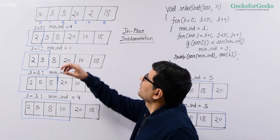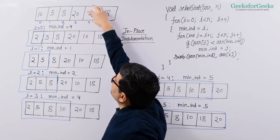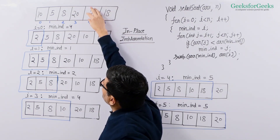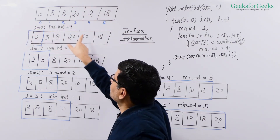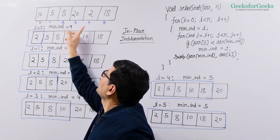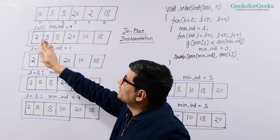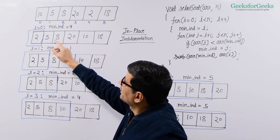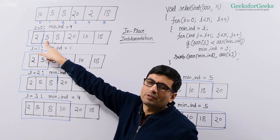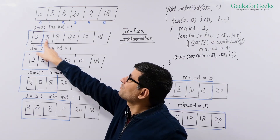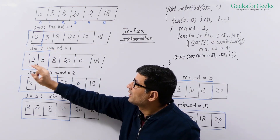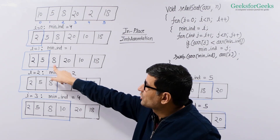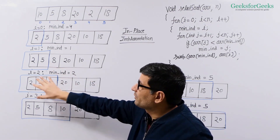Let's understand the in-place idea with this example. In the first iteration, like the naive implementation, we find out the minimum element, which is 2. Instead of putting 2 into a temporary array, we know it is going to be at index 0, so we swap it with the current element at index 0. So 10 comes to where 2 was, and 2 goes to index 0. This element is now fixed at its correct position. We then have the remaining subarray, and we find the minimum in it, which is 5. Since 5 is already at the next position, we swap 5 with 5. These two elements are now sorted. We find the minimum in the remaining array, which is 8, and it is also already in position, so we swap 8 with itself.